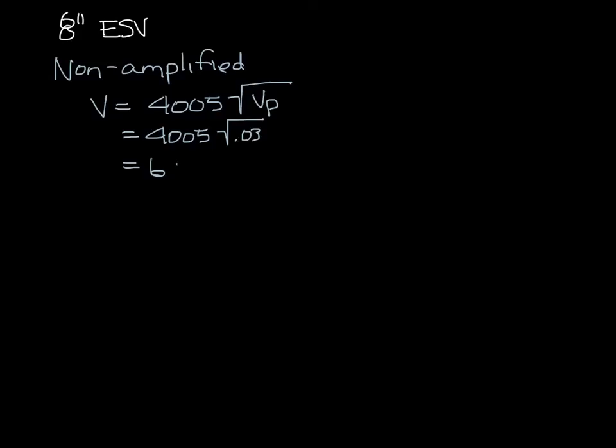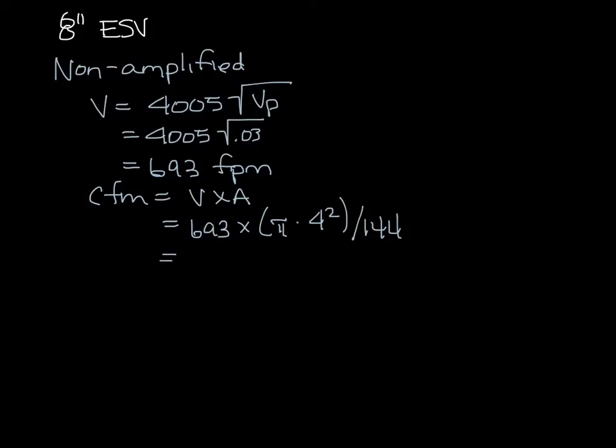And if we convert that to CFM, CFM equals velocity times area. So that's 693 times the area of the 8-inch ESV divided by 144 to get it into feet. And that's 693 times 0.349 equals 242 CFM.